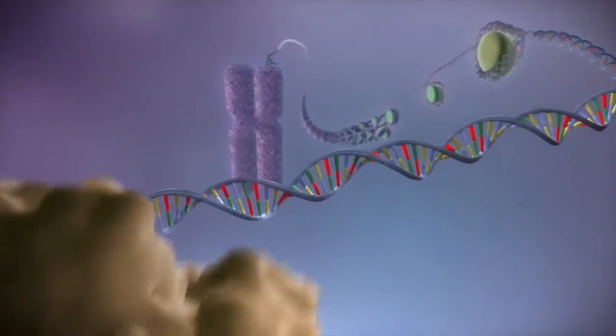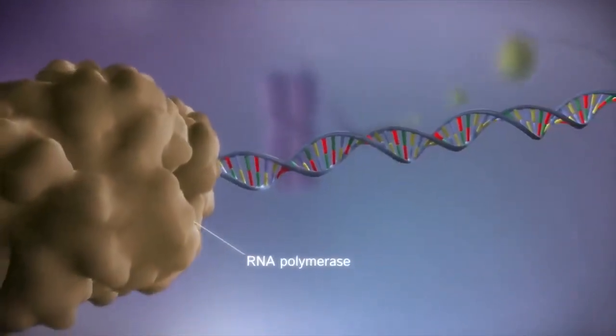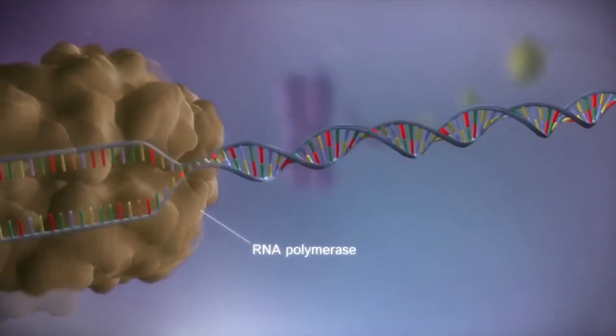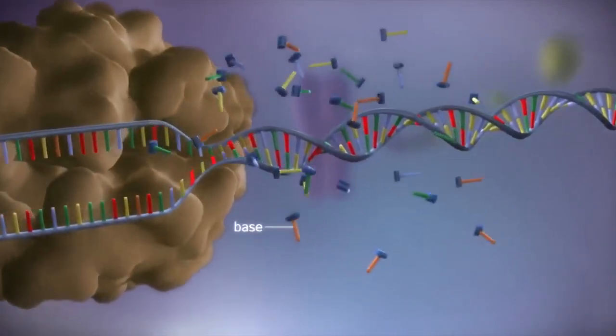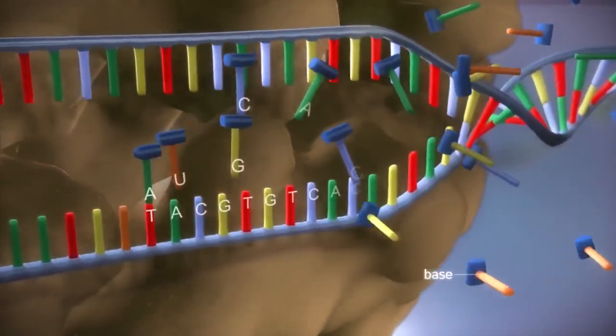When a gene is switched on, an enzyme called RNA polymerase attaches to the start of the gene. It moves along the DNA, making a strand of messenger RNA out of free bases in the nucleus.